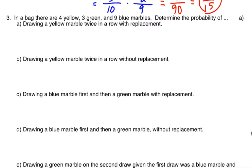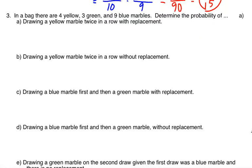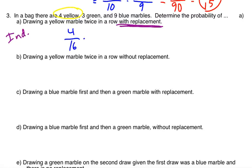And now to the marbles. There are four yellow, three green, and nine blue marbles. Determine the probability of drawing a yellow marble twice in a row with replacement. With replacement — does that mean it's independent or dependent? Is the probability of pulling the first marble out affecting what you get for the second marble? If you're putting the marble back, hopefully you're saying no, making this one independent. The probability of getting a yellow marble is four out of sixteen total. Times the second yellow marble — I put that one back, I still have sixteen marbles and still have four yellow ones. Multiply across the top and bottom and reduce.